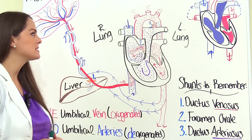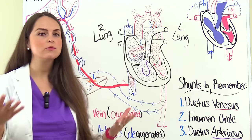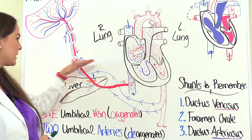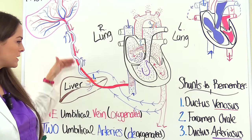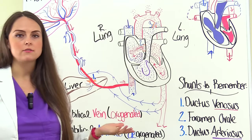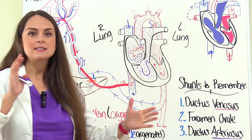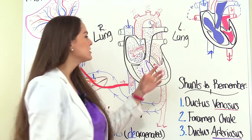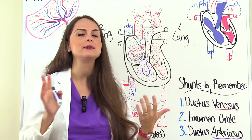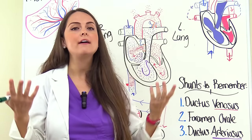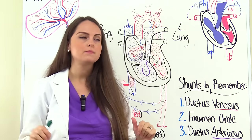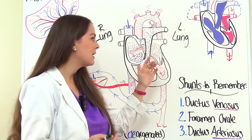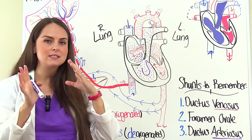Now let's talk about how this changes after birth. A baby is born and starts breathing on their own. One of the first things that happens is the umbilical cord is cut, stopping the transfer of blood flow back and forth. With the umbilical vein gone, we no longer need the ductus venosus — so it disappears. Before birth, the fluid in the lungs created high resistance, making right-side pressure much higher than the left. But once the baby starts breathing, they clear that fluid out, those sacs pop open, and resistance drops — changing the pressure dynamics.